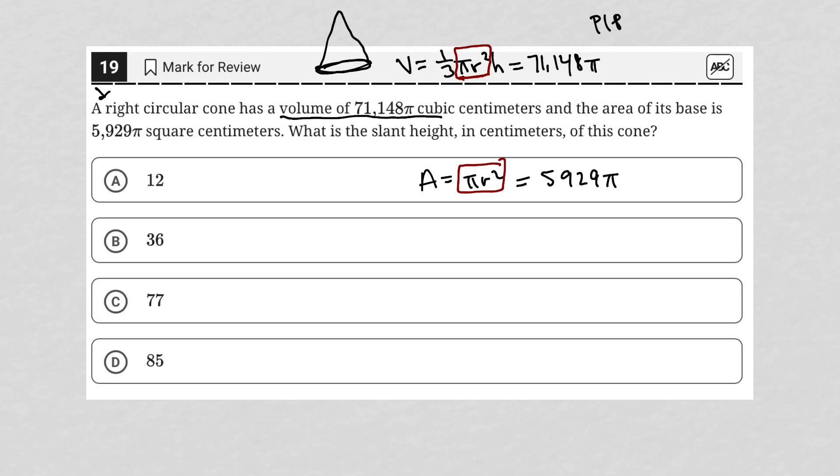So I can combine these two equations and say, well really the volume, the one-third πr²h is the same as one-third times 5,929π times h, and that's where we get the 71,148π from. The question goes on to say, what is the slant height in centimeters of this cone?